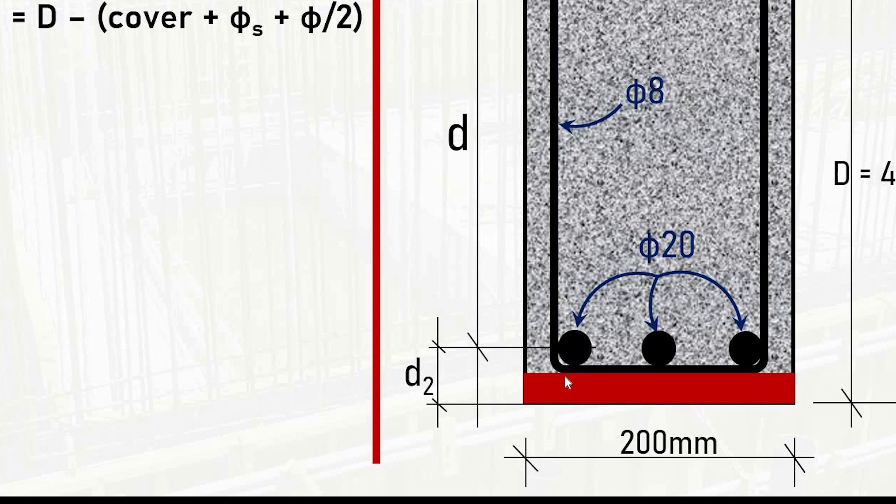So always we have to provide sufficient concrete cover for the reinforcements so that we protect it from corrosion and other environmental actions. This is one, so here is the cover. The cover. Now what's φs? It is the diameter of this stirrup.